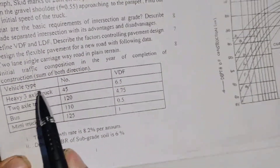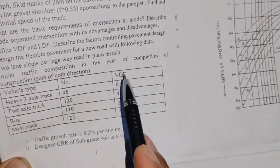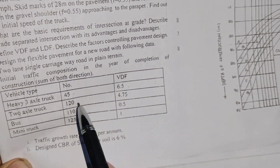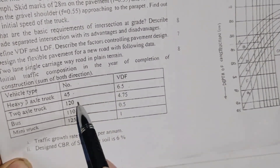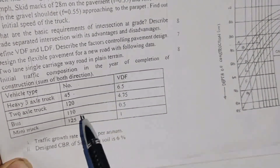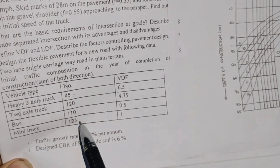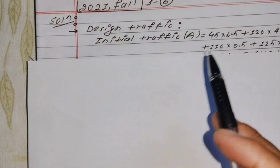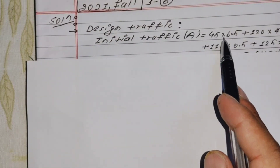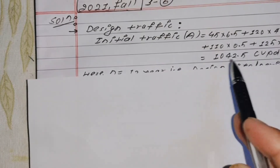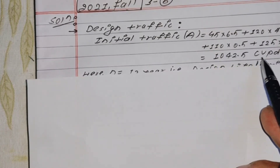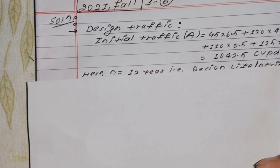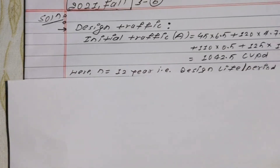For each heavy vehicle type, we multiply the number of vehicles by the vehicle damage factor — that is, N times VDF, summed for all vehicle types. This gives us the initial traffic of 1042.5 commercial vehicles per day (CVPD).